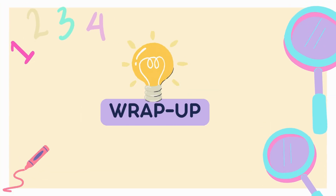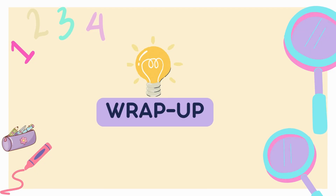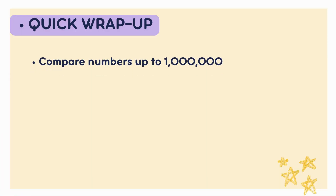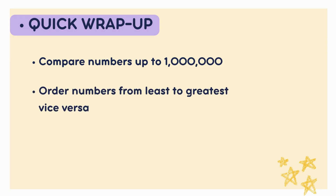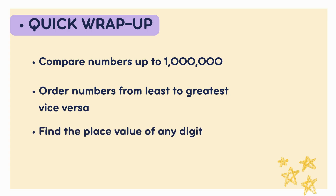Let's wrap it up, math stars! Today you learned how to compare large numbers by looking at the highest place values up to 1 million, order numbers from least to greatest and vice versa, identify the place value of each digit in big numbers, and connect all of this to real-life situations like city populations and property prices. Great work today!